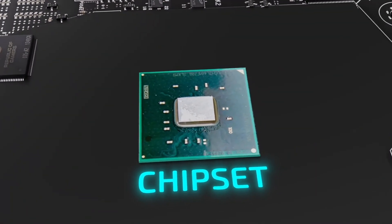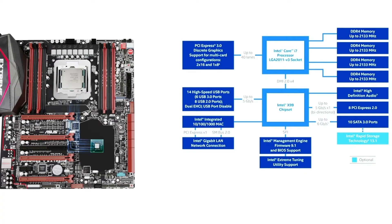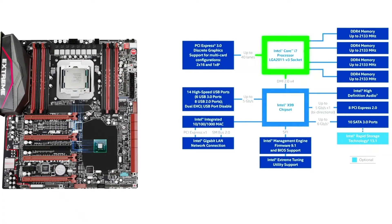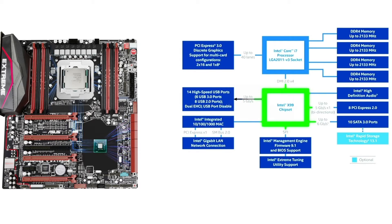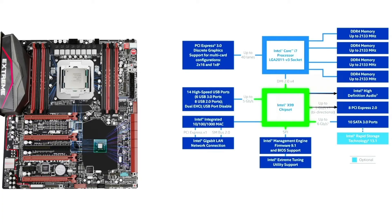Heading towards the chipset — a chipset is a set of electronic components on a motherboard that manages the data flow between the processor, memory, peripherals, and other system components. It acts as a central communication hub. The processor controls PCI Express slots and supports multi-card configuration. It controls the RAM based on DDR4 memory. The chipset also controls 14 high-speed USB ports, Intel integrated PCI Express network connections, manages the engine framework, 8 PCI Express lanes, 10 SATA 3.0 ports, Intel high-definition audio, and optionally Rapid Storage Technology.